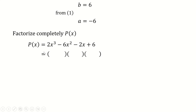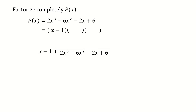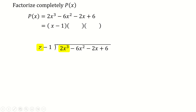We need to find the other two factors. We'll use polynomial long division, dividing p by x minus 1. Starting the long division process: to get 2x³, we multiply x by 2x², so 2x² is the first term of the quotient.